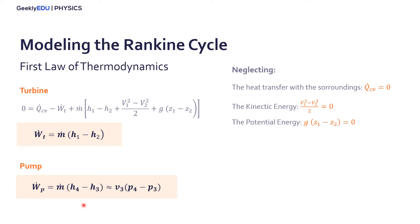For the pump, generally, we use an approximation that's much easier to calculate in real life, because the specific volume of the water, in this case when you are increasing the pressure, it's almost constant. So we can calculate this work just using the specific volume times the difference in pressure of the outlet and inlet.